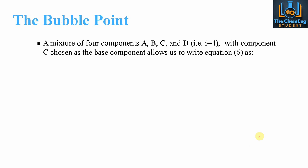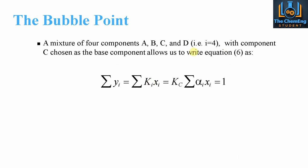Say we take a mixture of four components and consider the bubble point first — so we have A, B, C, and D, meaning the ith component is going to be 4. We'll choose component C as a base component. You can choose any component you want, so long as you stay consistent within the calculations. We're going to write a general equation and we'll denote this as equation 6.